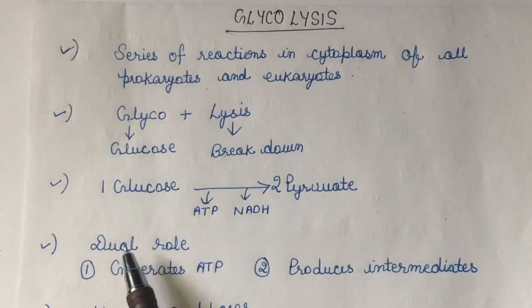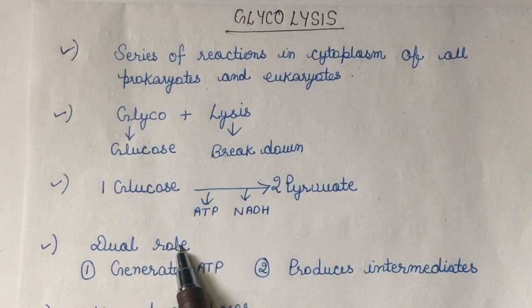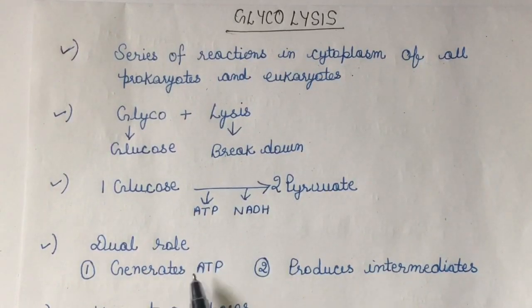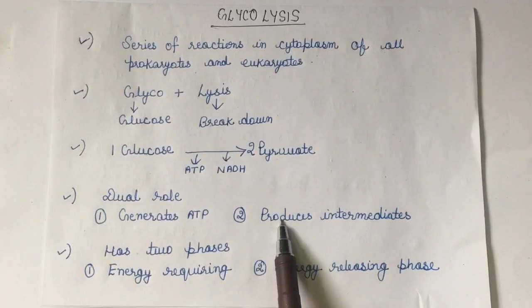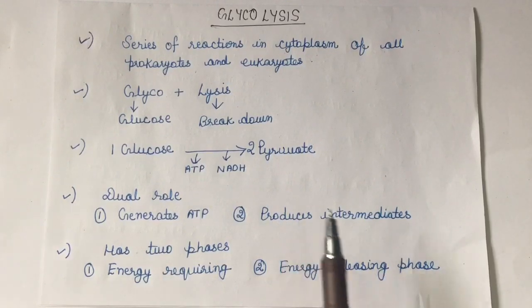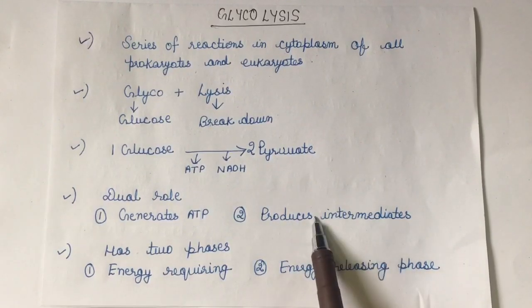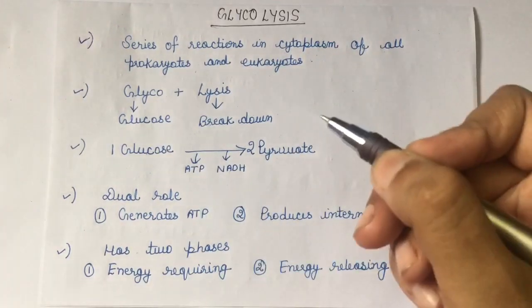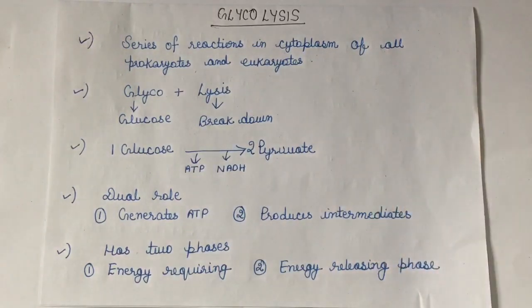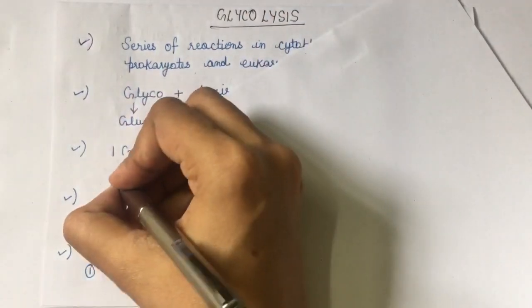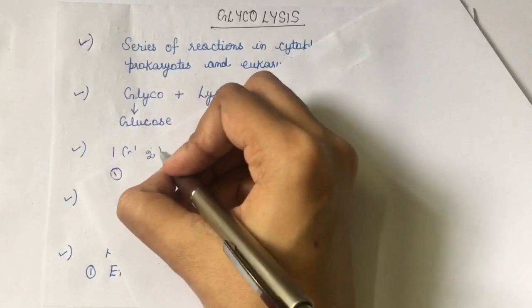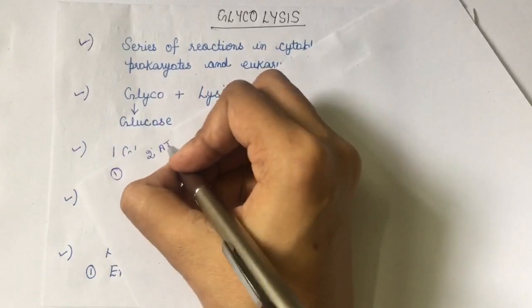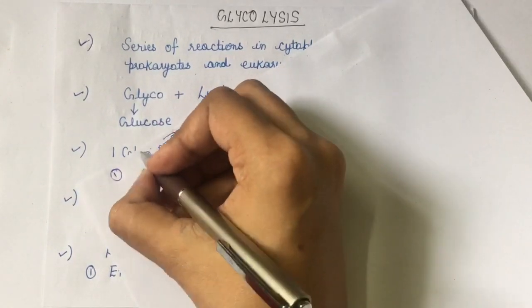Glycolysis basically has a dual role. The first role is to produce ATP, and the second is to produce intermediates that act as precursors for many biosynthetic pathways. However, in glycolysis only two ATP molecules are produced.